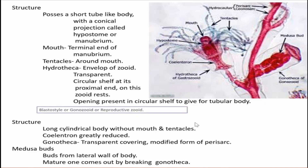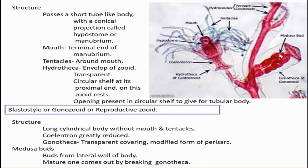Next we learn about the blastostyle, which is the reproductive zooid. Its structure consists of a long cylindrical body without mouth and tentacles. Its coelenteron — the gastrovascular cavity — is also greatly reduced. An envelope covering called gonotheca is present. In its body, many buds called medusa buds can be seen.